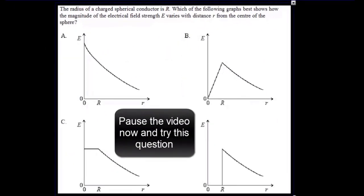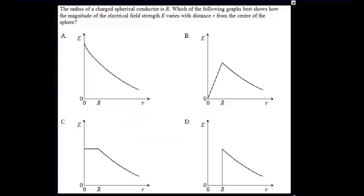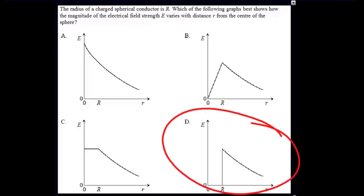Here's a little IB question — stop the video and see if you can work out the answer. The correct answer is this one: it's a charged spherical conductor, so the electric field has to be zero on the inside — E equals zero. Once you get outside that conductor, the electric field will drop off basically as one over R squared.